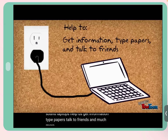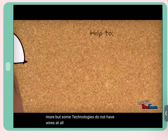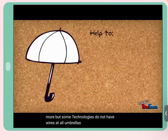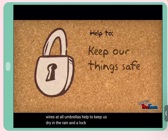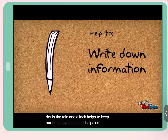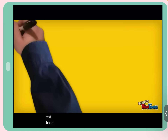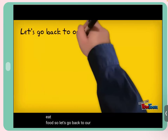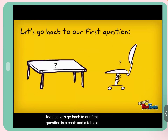Video continued: Some technologies don't have wires at all — umbrellas keep us dry, locks keep our things safe, pencils help us write, and forks help us eat. So, going back to the original question: is a chair and a table a technology?